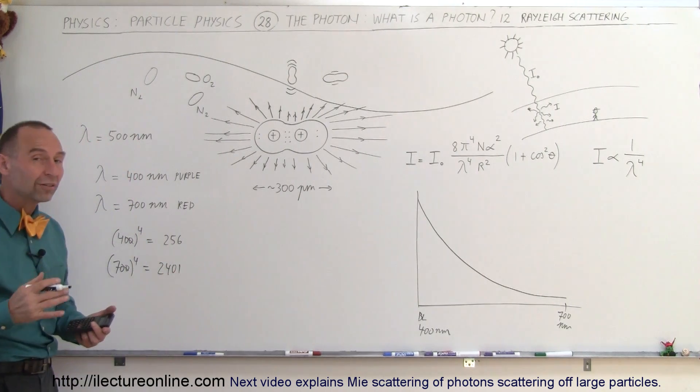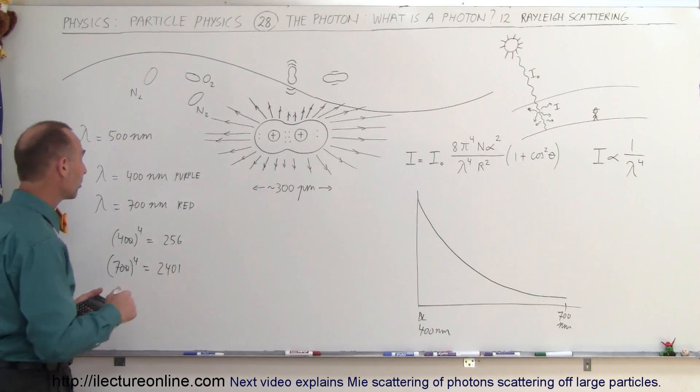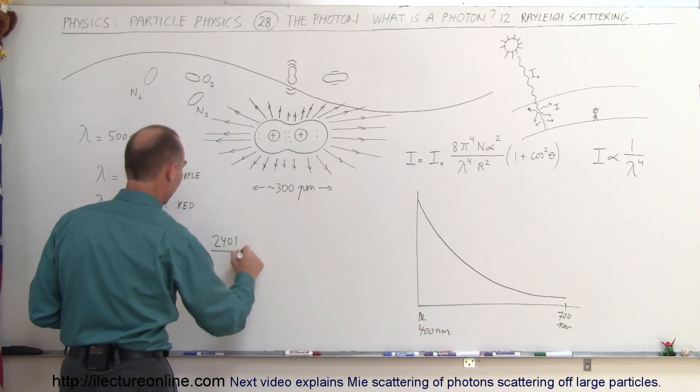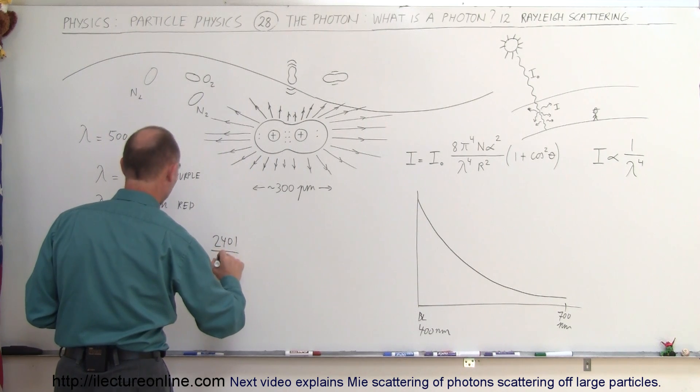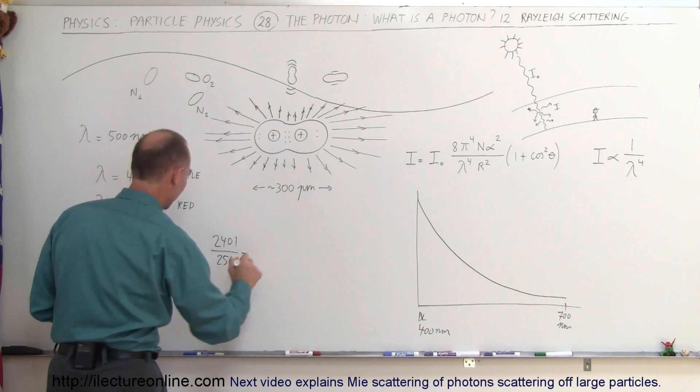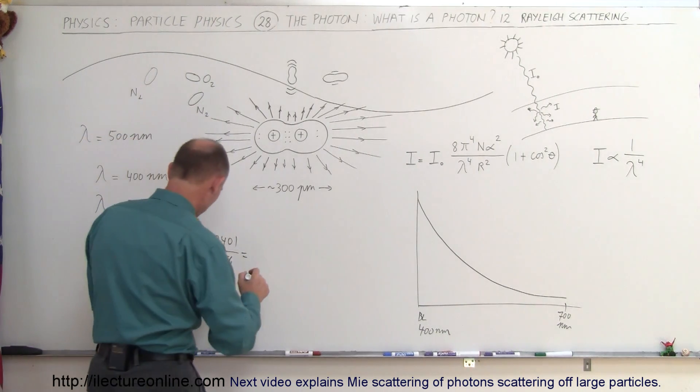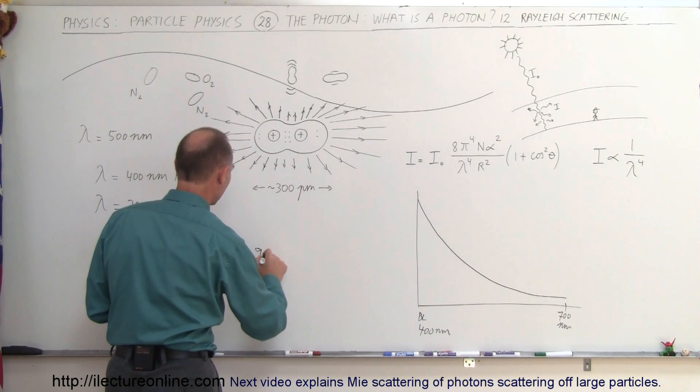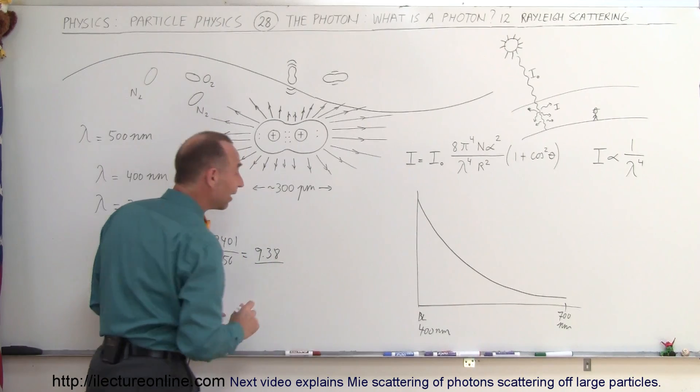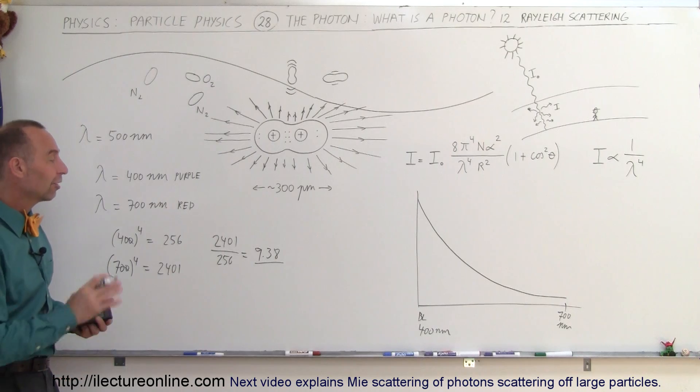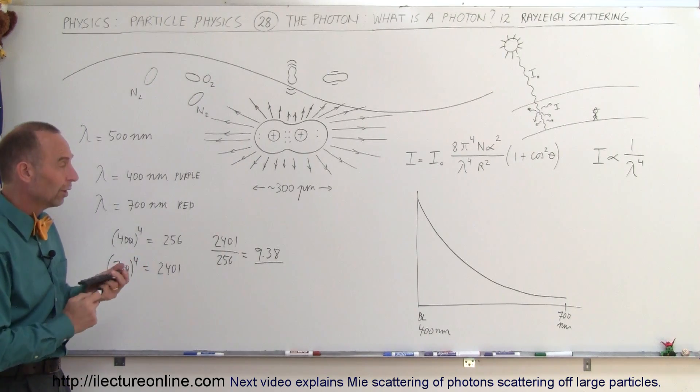So ratio-wise, how much more the blue light gets scattered out compared to the red light. If we take the 2,401, because it's inversely proportional so we have to take the inverse of that, 2,401 divided by 256, what do we get? We get 9.38, which means that blue light is more than 9 times as likely to get scattered out in the atmosphere as red light. So ratio of about 9 to 1.